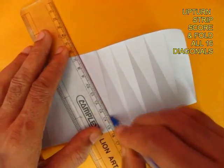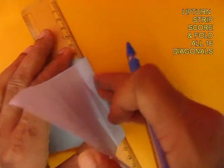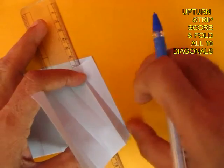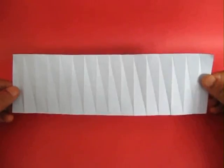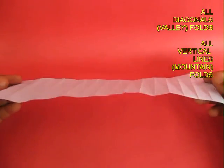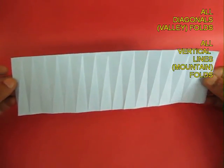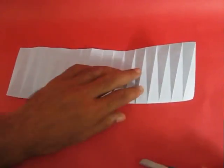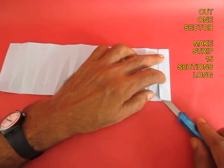Keep doing this until you have folded the diagonals of all 16 rectangles. You will find that all the diagonals are valley folds and all the vertical lines are mountain folds.